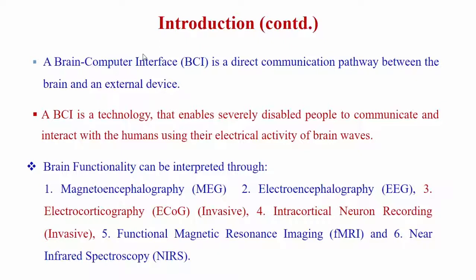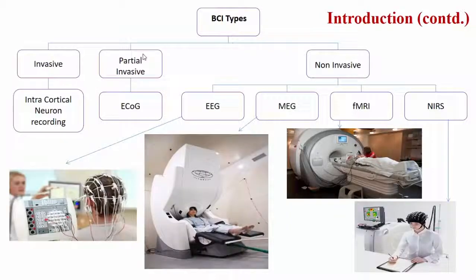Now I will briefly explain the Brain-Computer Interface. BCI is a direct communication pathway between the brain and an external device, primarily to help severely disabled people communicate using their brain's electrical activity. Brain functionality can be interpreted through metabolic or electrical activities. Non-invasive types include magnetoencephalography, electroencephalography, fMRI, and NIRS. Invasive types include electrocorticography and intracortical neuron recording.